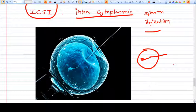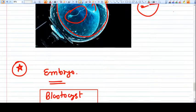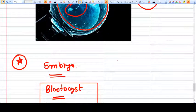See here, this is an ova, and the sperm is injected into the ova with the help of a very microscopic micropipette. So this is a very important technology nowadays.